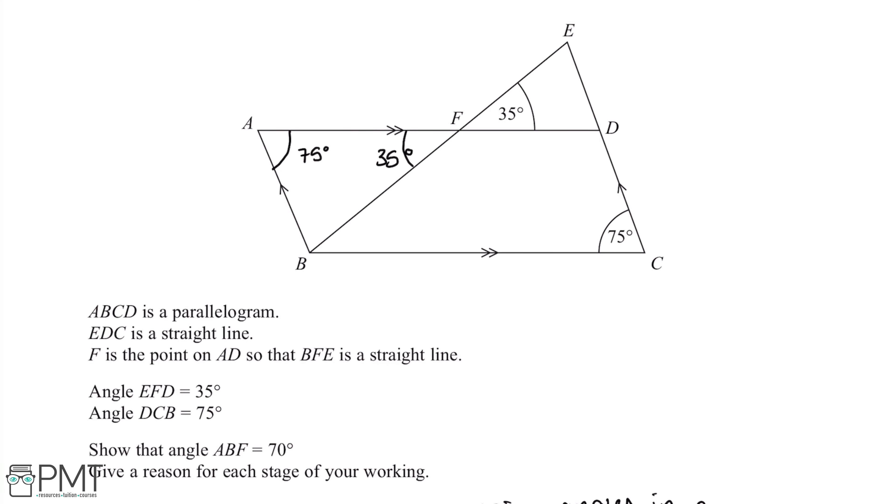So now in our diagram we have enough information to complete this question. The question is to show that angle ABF is 70 degrees. Now as we can see, we have a triangle here, which is triangle ABF, and we have two angles in this triangle. Now all angles in a triangle add up to 180 degrees, so we can work out what this angle here, ABF, will be equal to.